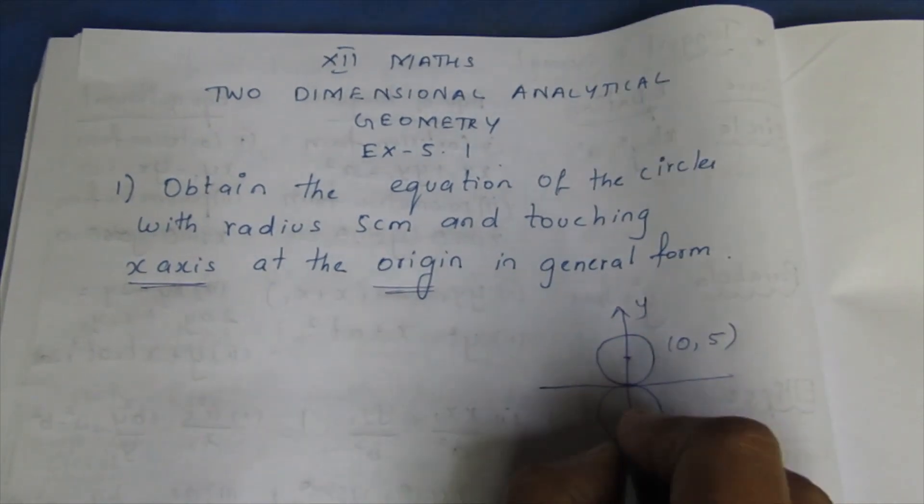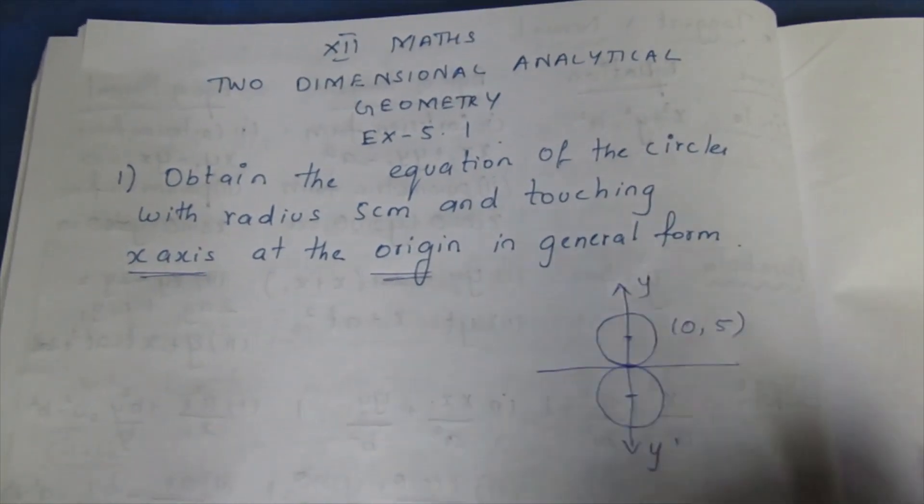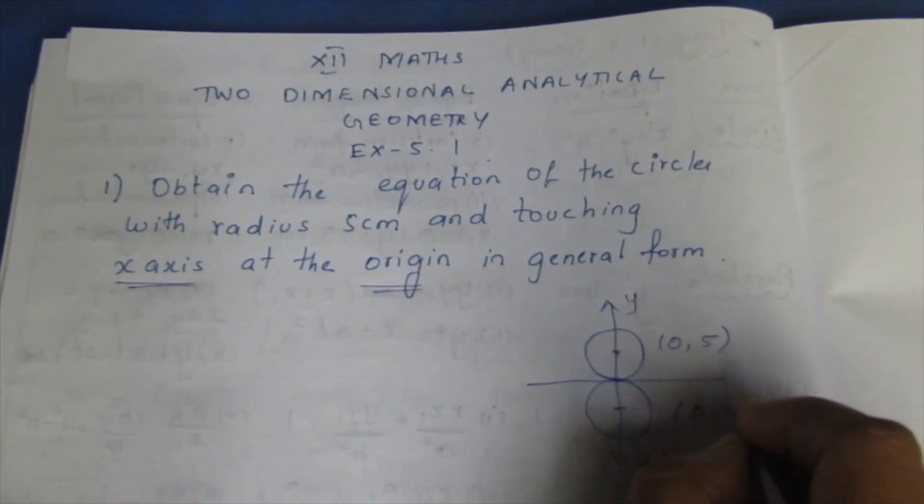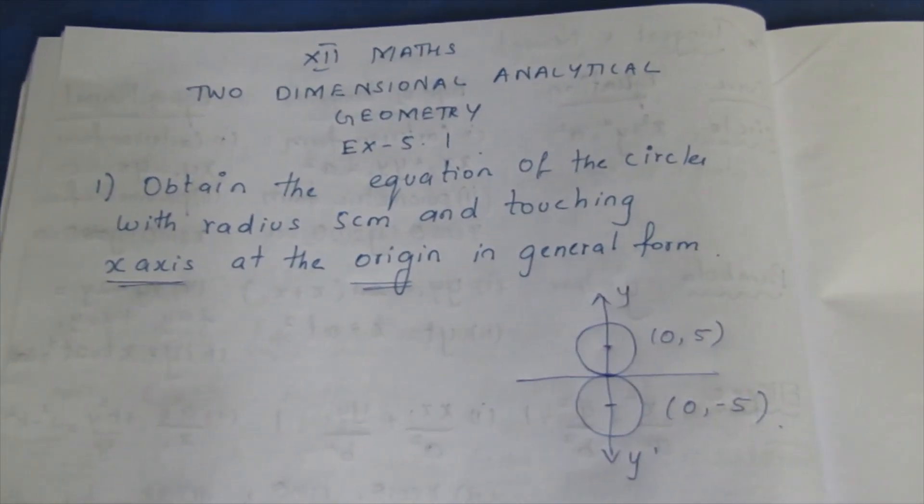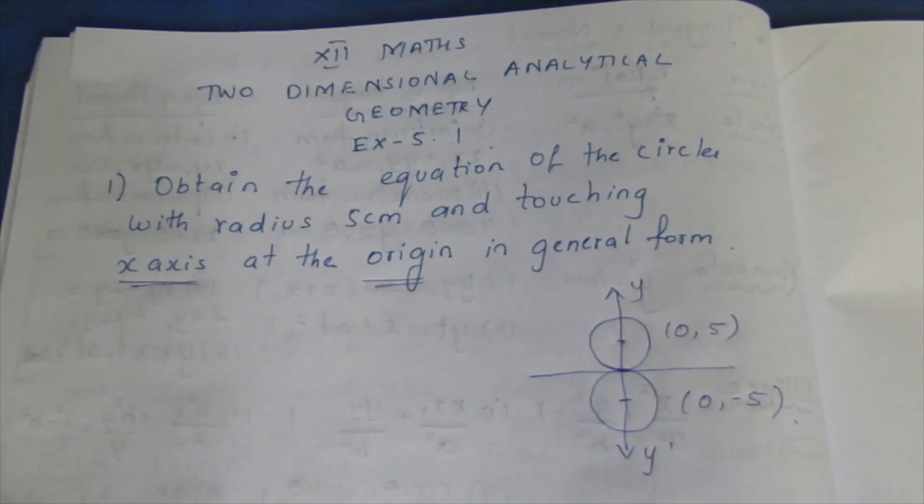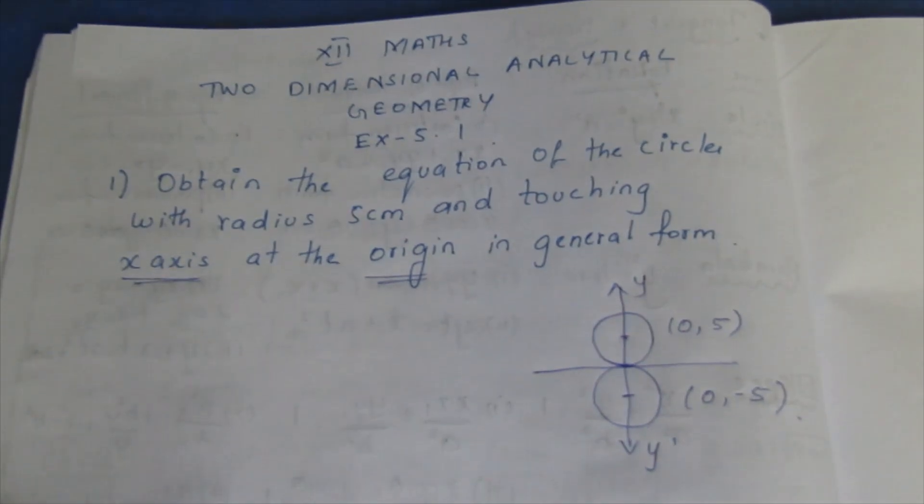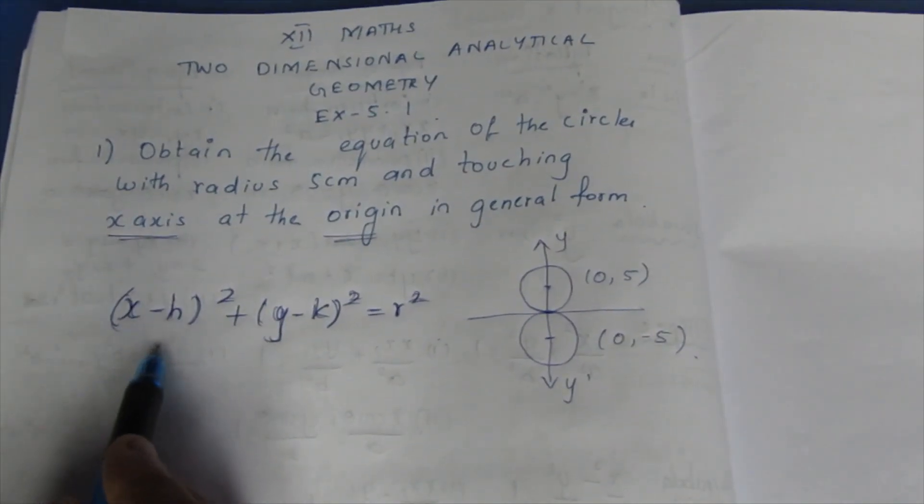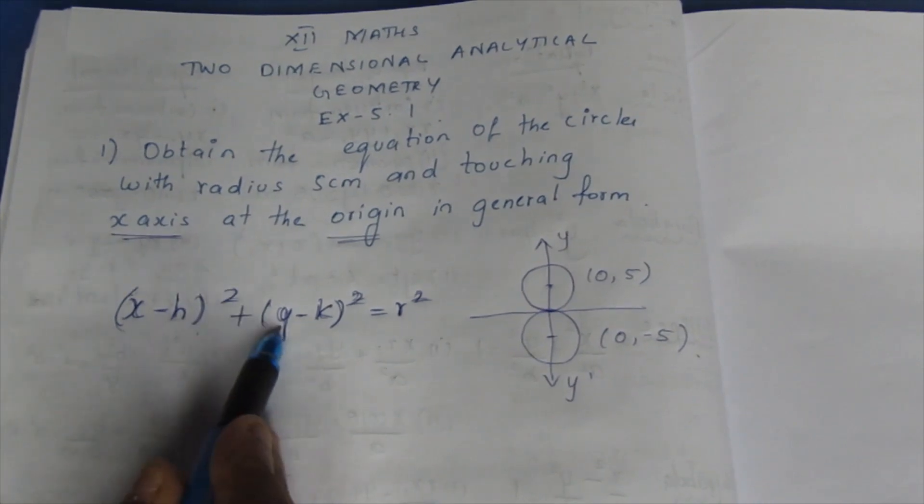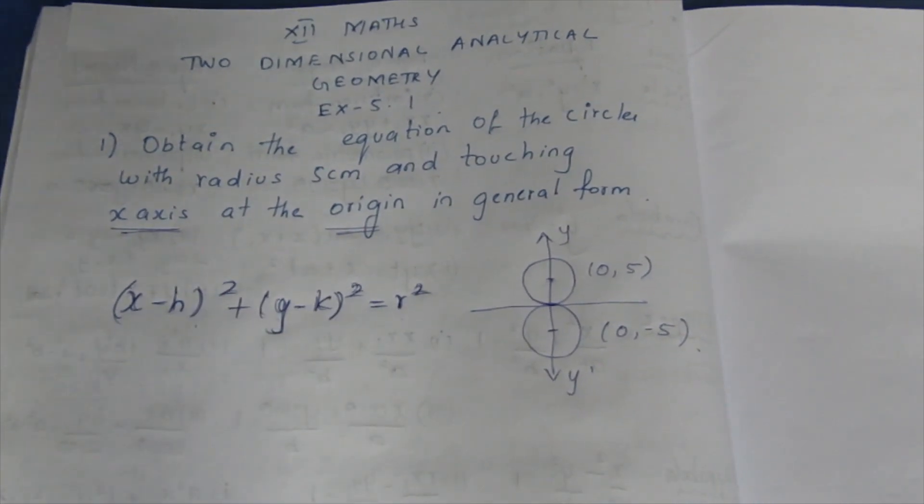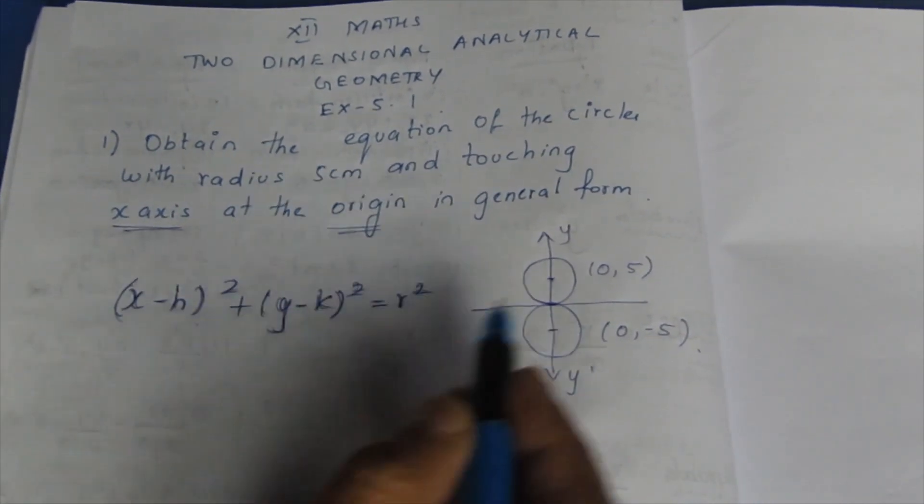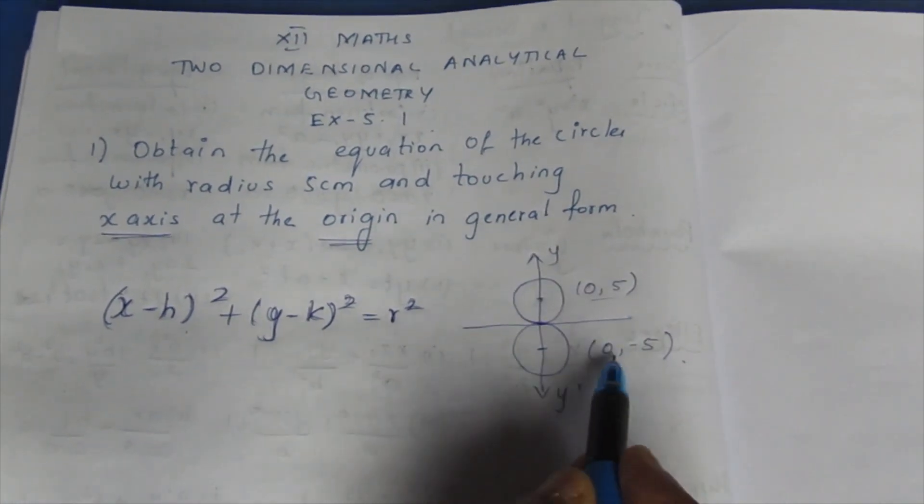The formula is (x-h)^2 plus (y-k)^2 the whole square equal to r^2. Here h,k is the center point. Center point is (0,5) or (0,-5).